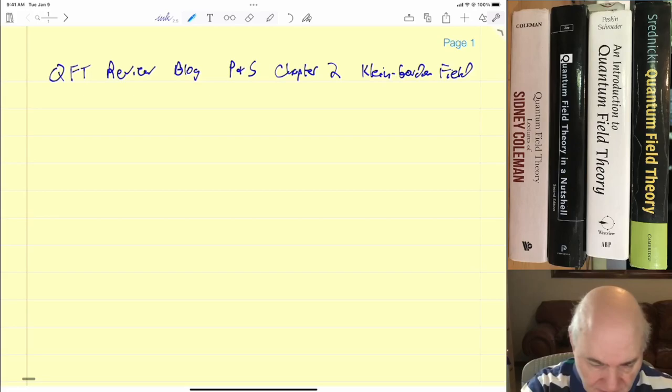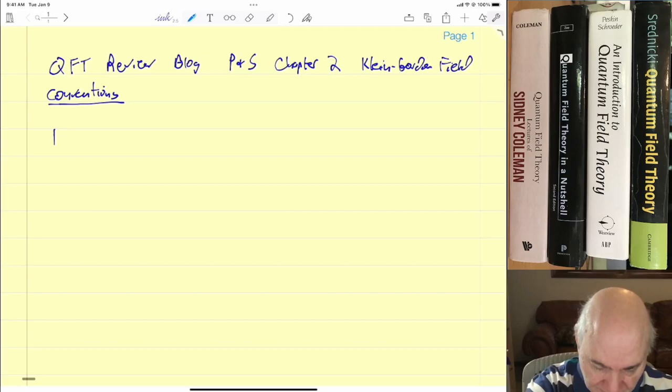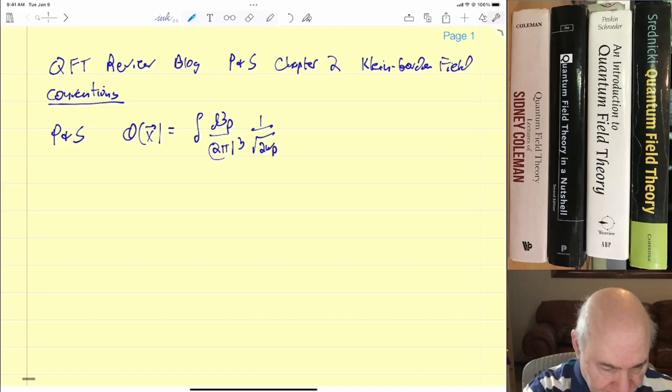I want to start off by talking about conventions. This is a bit of a problem because every QFT book I have uses a different convention. Let's go through them just to show you what I mean. Peskin and Schroeder define the field as the integral of d³p over (2π)³, 1 over square root of 2ωp.